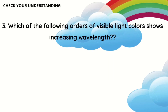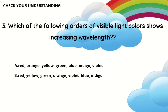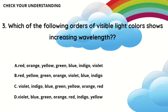Question three: which of the following orders of visible light color shows increasing wavelength? A — red, orange, yellow, green, blue, indigo, violet. B — red, yellow, green, orange, violet, blue, indigo. C — violet, indigo, blue, green, yellow, orange, red. D — violet, blue, green, orange, red, indigo, yellow.